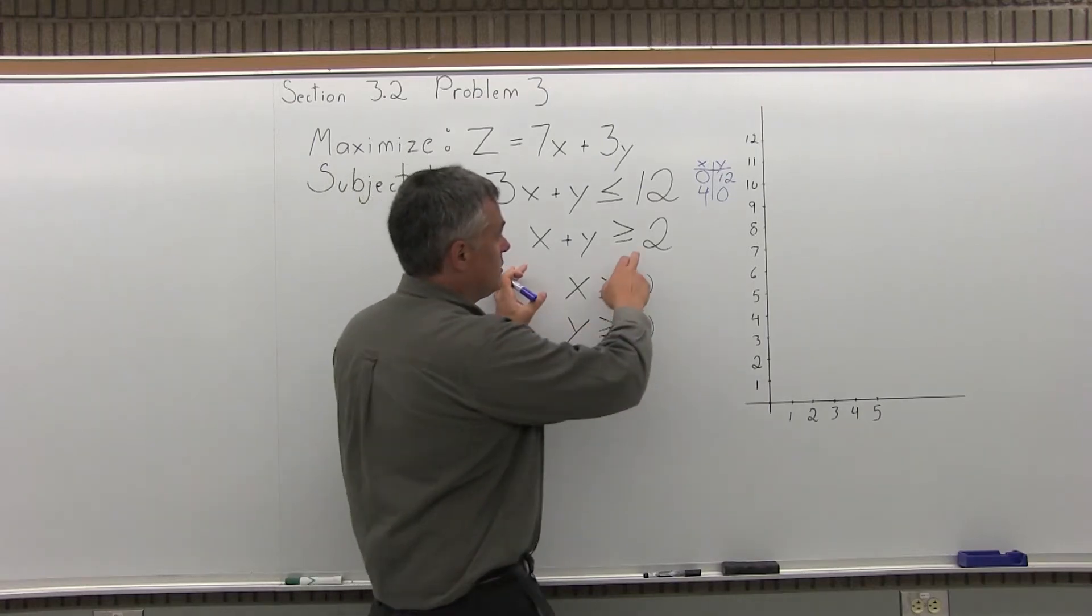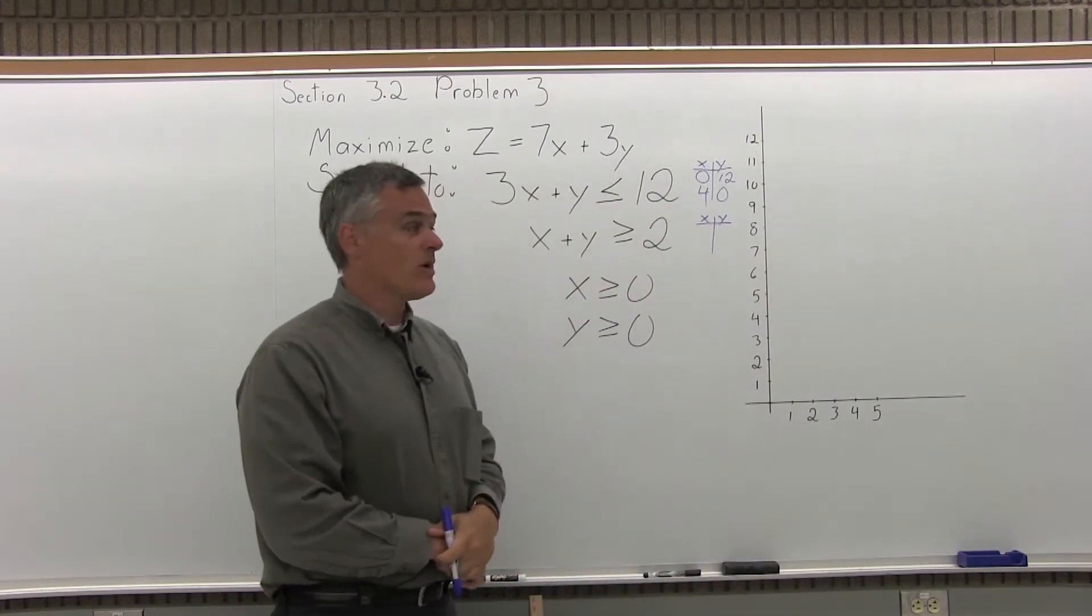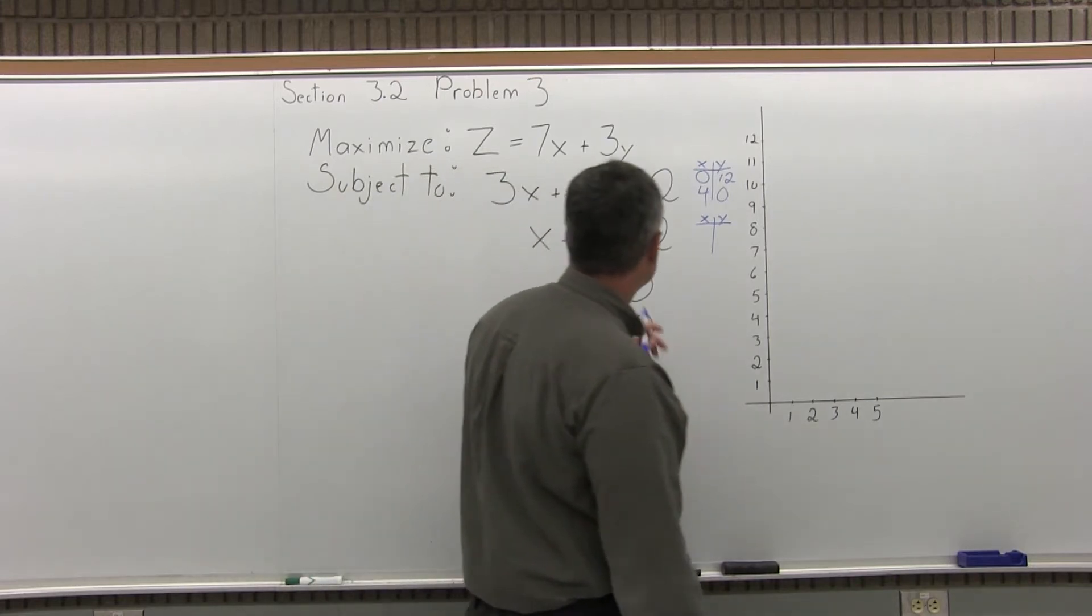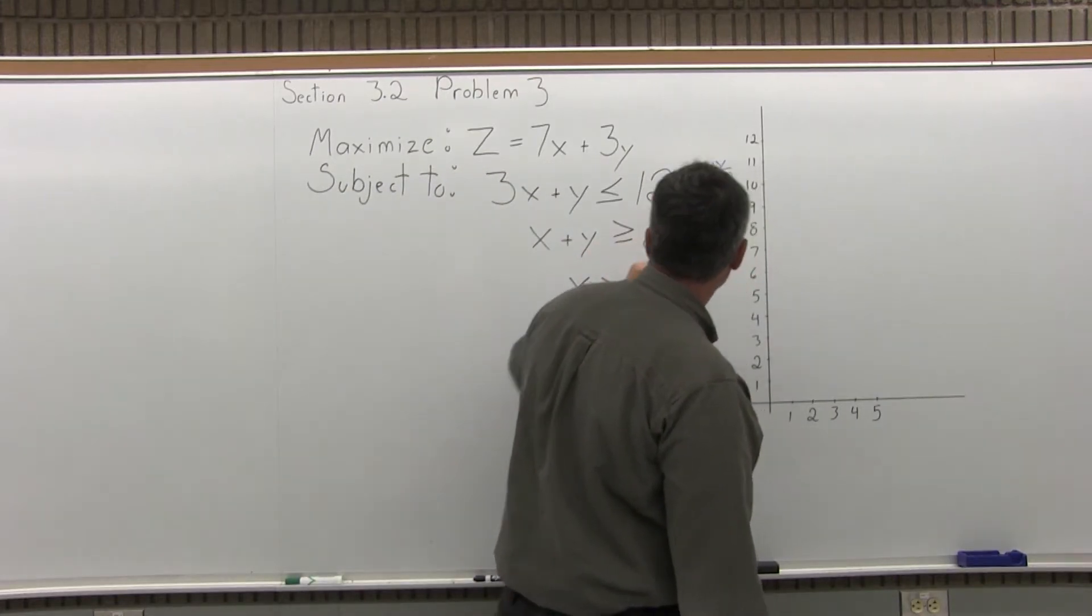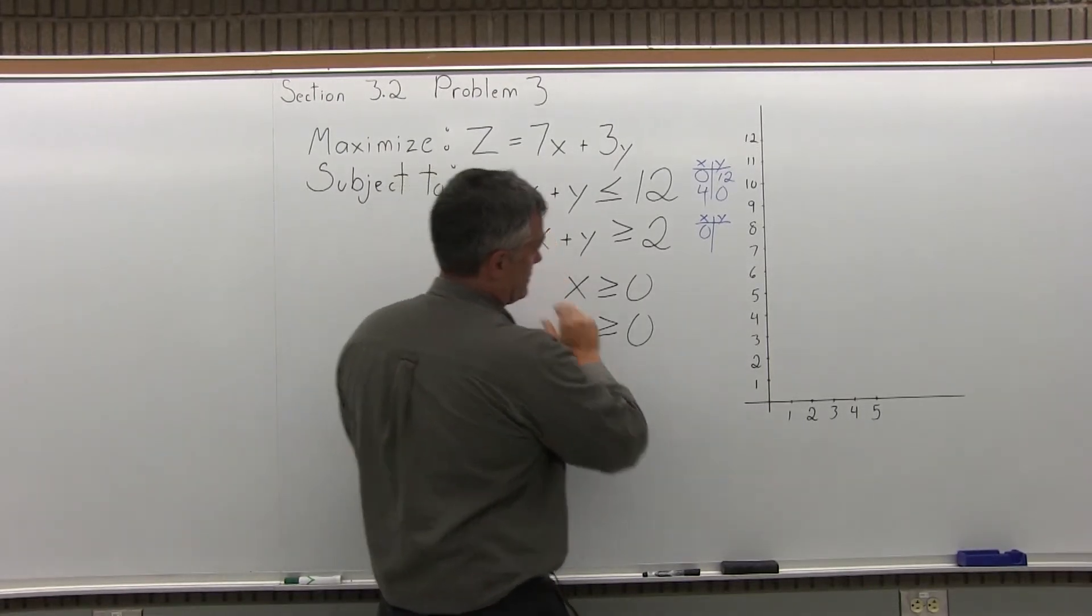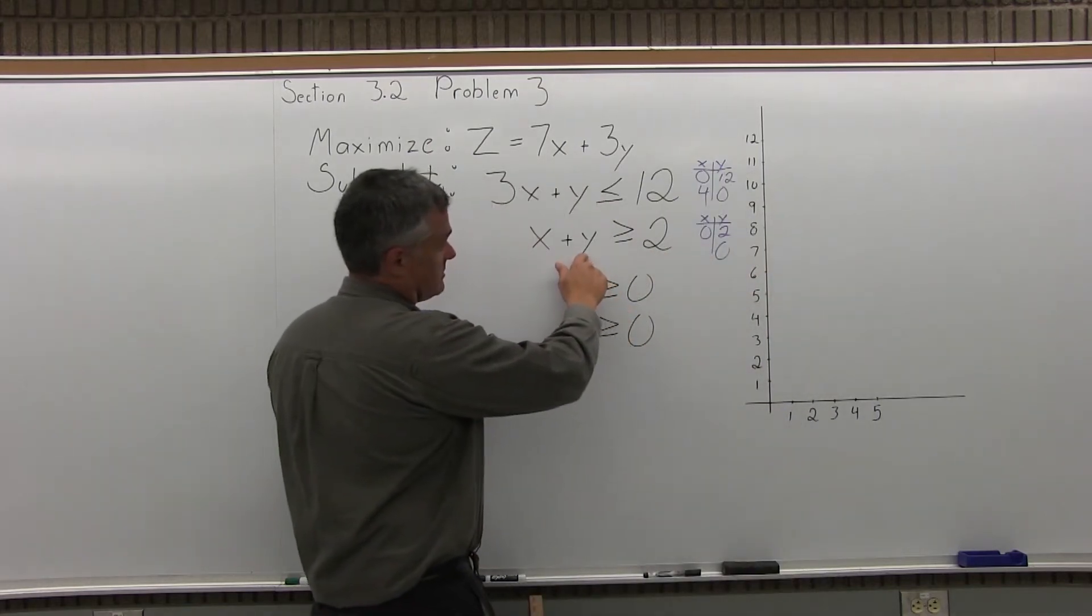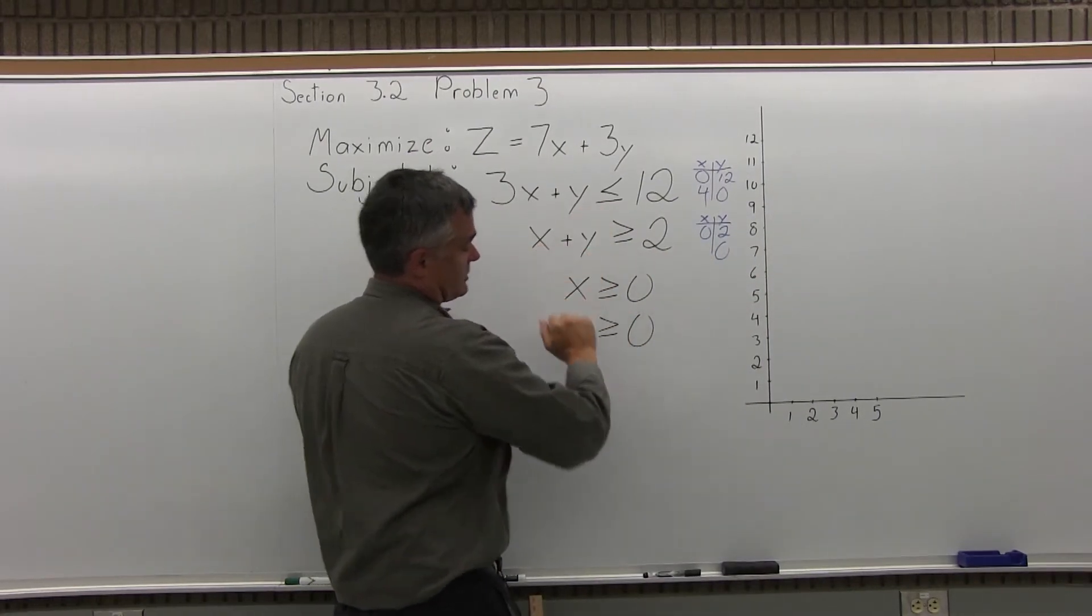And then for the other one with the 2, I'll make the same little x, y chart. Again, pretend it's x plus y equals 2. This one's pretty easy. If I let x equal 0, the equation becomes y equals 2. And then if I let y equal 0, I get the equation x equals 2.